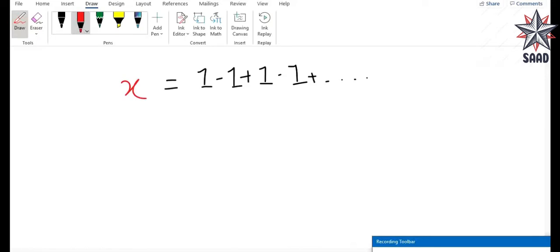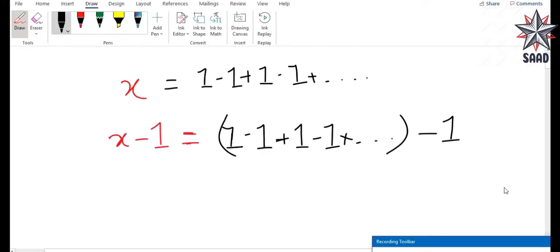In the next step, we will apply a little trick. We will subtract 1 from both sides of the equation. So subtracting 1 from both sides will give a series like this.